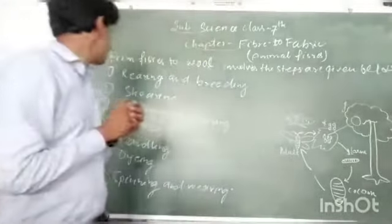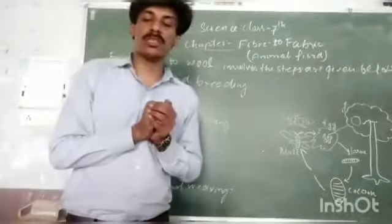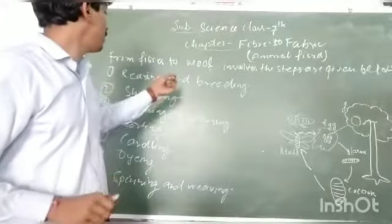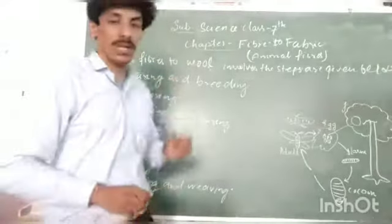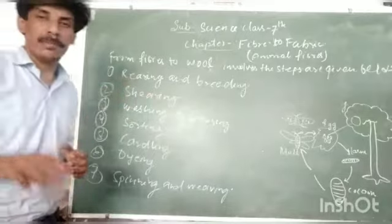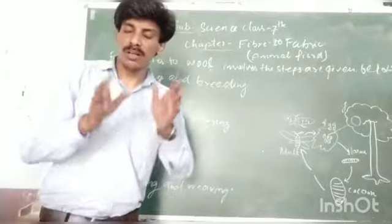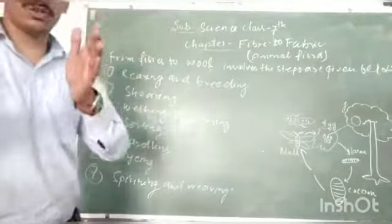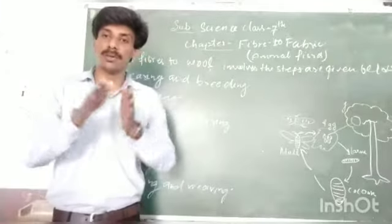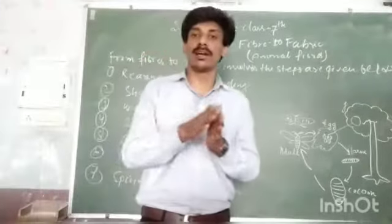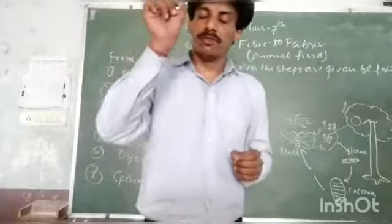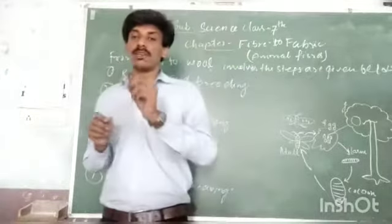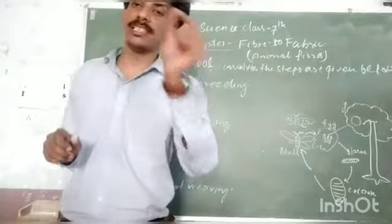The next topic is shearing. After breeding or rearing process, you use the shearing process. Shearing means fleece or hairs or fibers are cut by machine. They are cut in spring season or summer season.